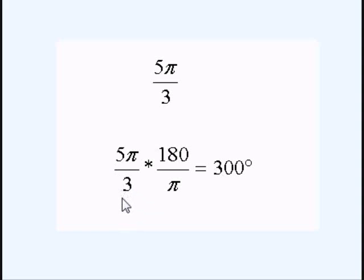So, 5 pi over 3 times 180 over pi, after we simplify, is just 300 degrees.